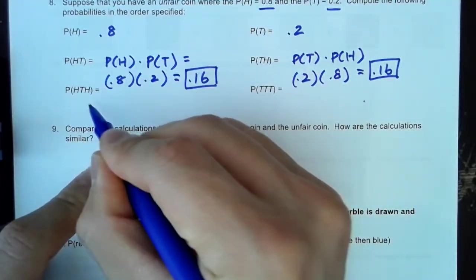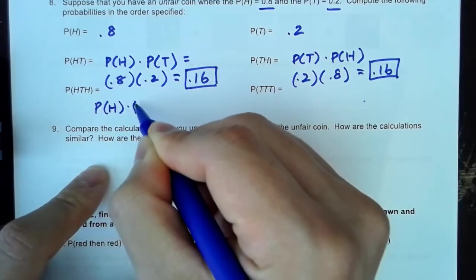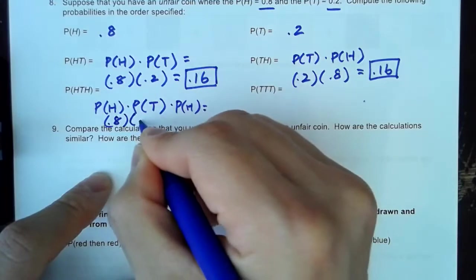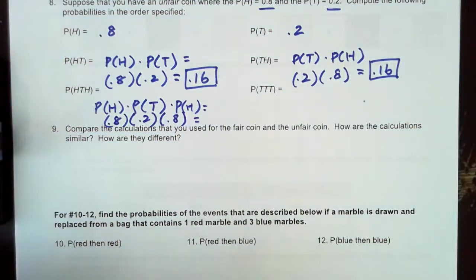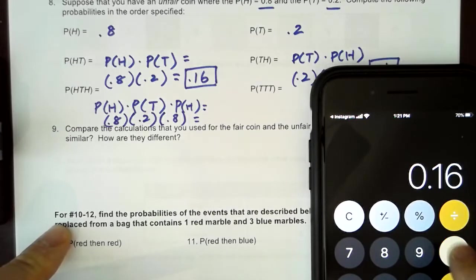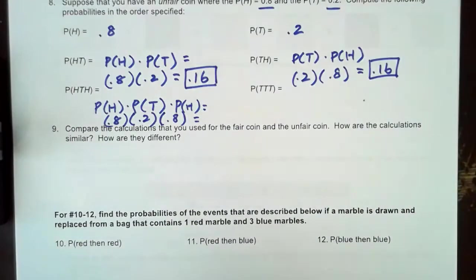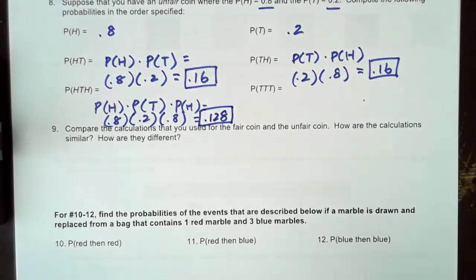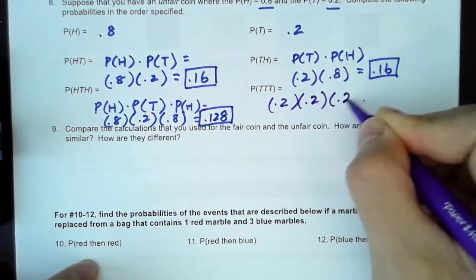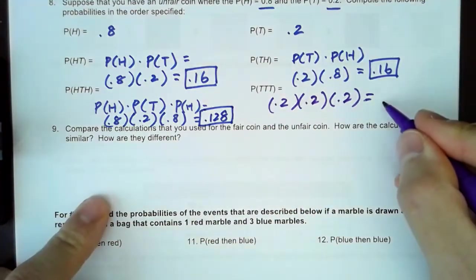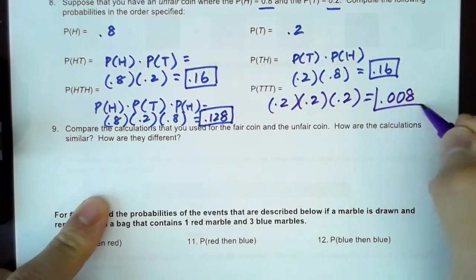Now I'm going to write the probability of heads, tails, heads — which means you have to do 0.8 times 0.2 times 0.8. That's not something I'd expect you to do without a calculator, so using my calculator: 0.8 times 0.2 times 0.8 gives me 0.128.